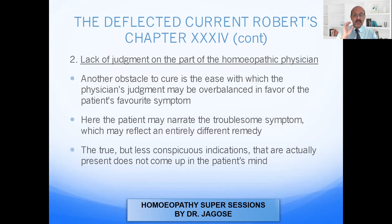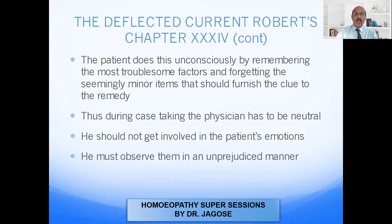Some people may be feigning disease — they pretend to have a disease but are actually healthy, wanting to fool the physician. Dr. Hahnemann clearly stated in the Organon that different patients exist and the physician must have proper judgment, taking what is right and leaving out what is wrong. The patient may narrate a troublesome symptom that reflects an entirely different remedy. The true but less conspicuous indication actually present does not come up in the patient's mind, as inconspicuous symptoms are not considered important by the patient.